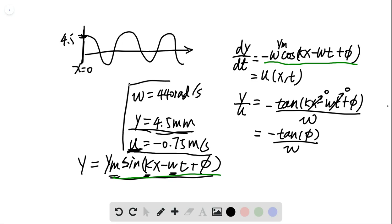So now phi equals the inverse tangent of y over u times omega, where we substitute the values at x equals 0 and t equals 0.